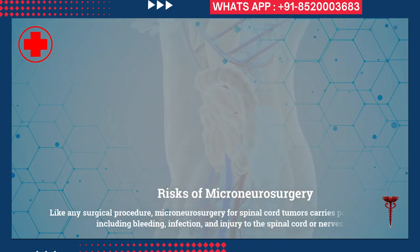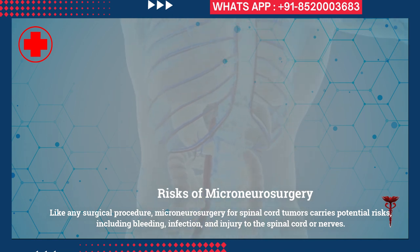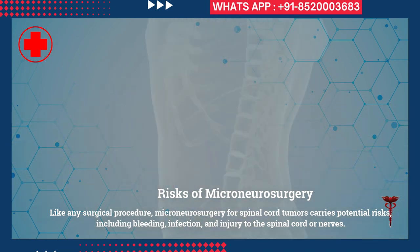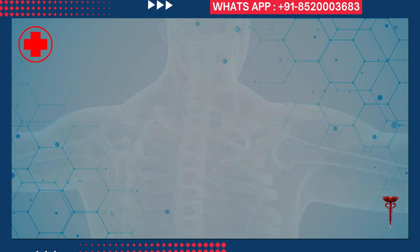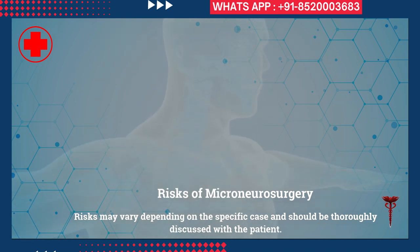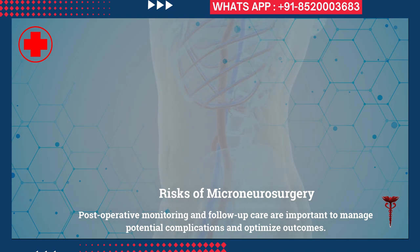Risks of micro neurosurgery: like any surgical procedure, micro neurosurgery for spinal cord tumors carries potential risks including bleeding, infection, and injury to the spinal cord or nerves. Risks may vary depending on the specific case and should be thoroughly discussed with the patient. Postoperative monitoring and follow-up care are important to manage potential complications and optimize outcomes.